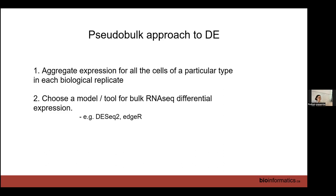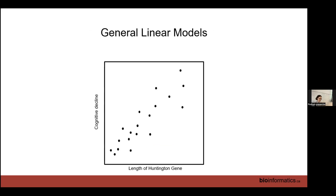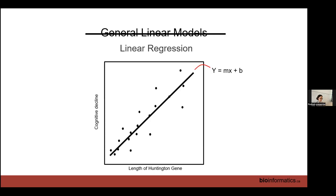Now we can treat the pseudobulk as bulk RNA-seq and use any model or tool used for bulk RNA-seq. These are all based on a generalized linear model (GLM). To explain this: think about linear regression with y = mx + b, or in our notation b0 for intercept and b1 for slope — the coefficients. Here x and y are continuous. What if x is discrete, like pathogenic or not, mutant or wild type? We just encode no as zero and yes as one, making x numeric. Now I can use linear regression again — the slope b1 is just the difference between the two groups.